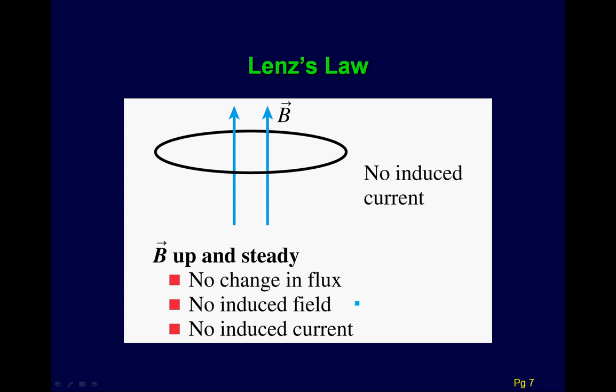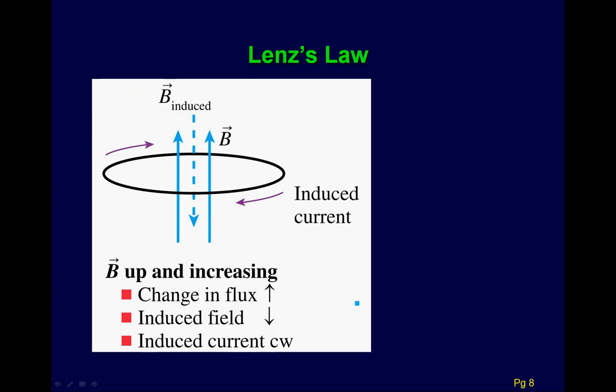Knight goes through every possible Lenz's Law case. Here's one: the B field is up and steady — no change, so there's no induced field and no induced current.